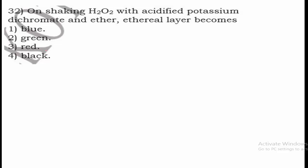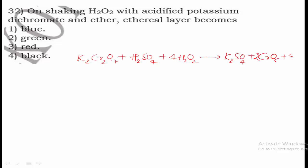Question 32: On shaking H2O2 with acidified potassium dichromate (K2Cr2O7 + H2SO4) and ether, what does the ethereal layer become? The reaction produces CrO5 (chromium pentoxide), which forms a blue-colored layer that acts as the ethereal layer. Hence the ethereal layer becomes blue in color, and option 1 is the right answer.